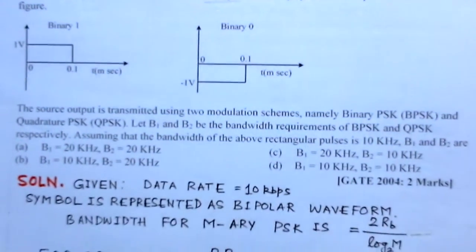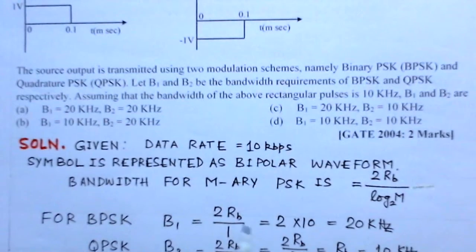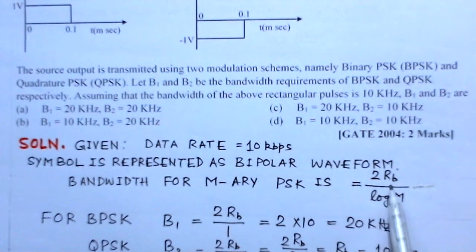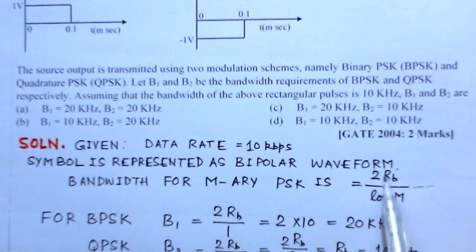So we just start doing the problem. See the solution - we can observe here the data rate is 10 kbps, symbol is represented as bipolar waveform. The bandwidth would be decided by this relation - this is the standard relation given.